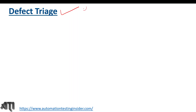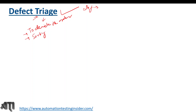Let's start with the definition of defect triage. But before that, let's understand the meaning of the word 'triage.' In simple words, triage means to decide something — to decide the order or to sort something out. Sorting things out is essentially what triage means. That's the simple meaning of the word triage.